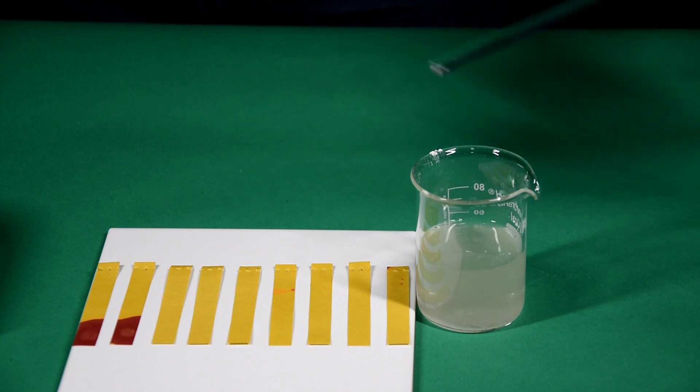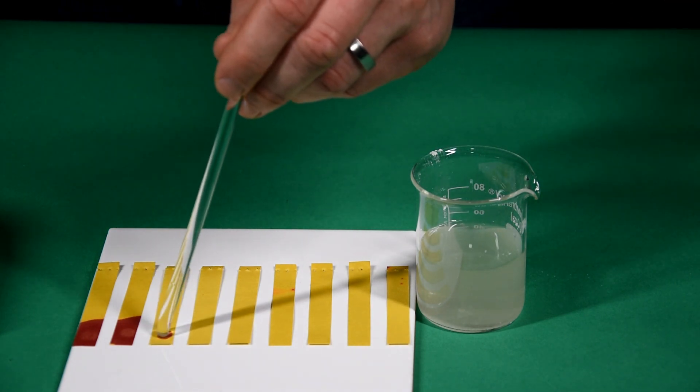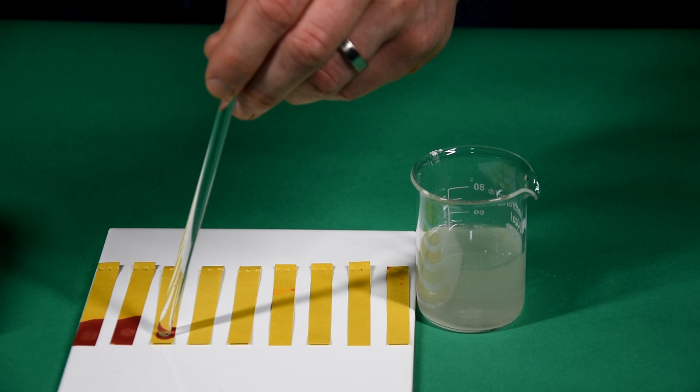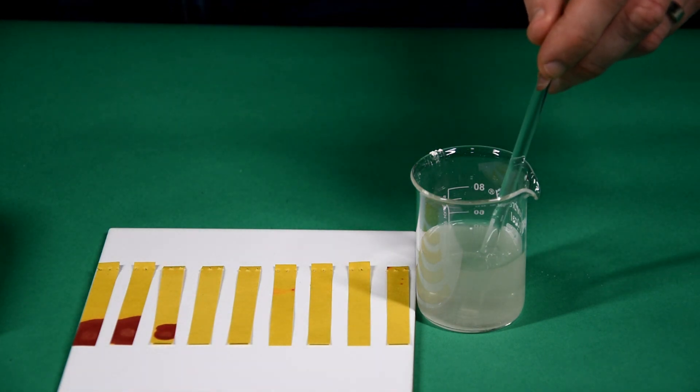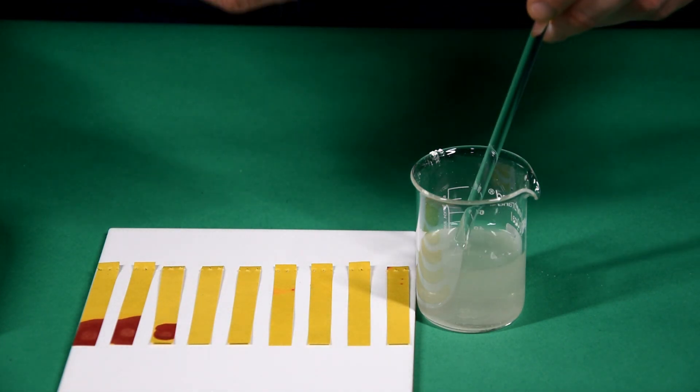Use the glass rod to add a drop to the third sheet of paper. The red color indicates high levels of hydrogen ions and a low pH number.